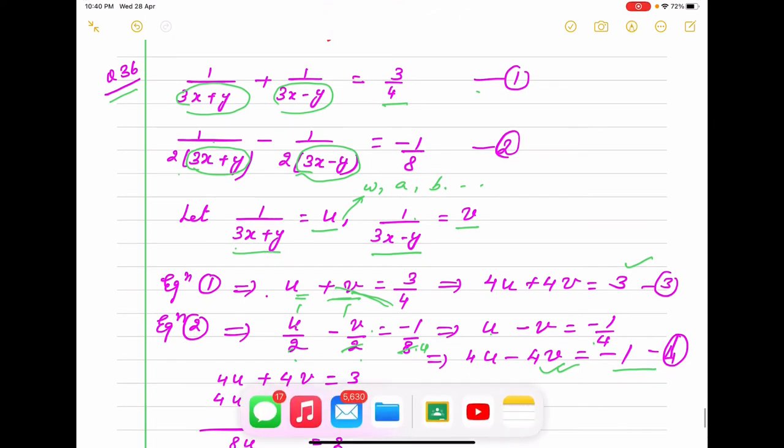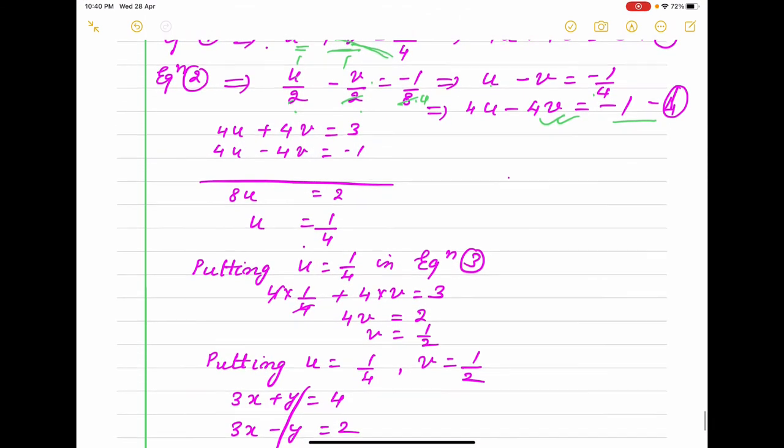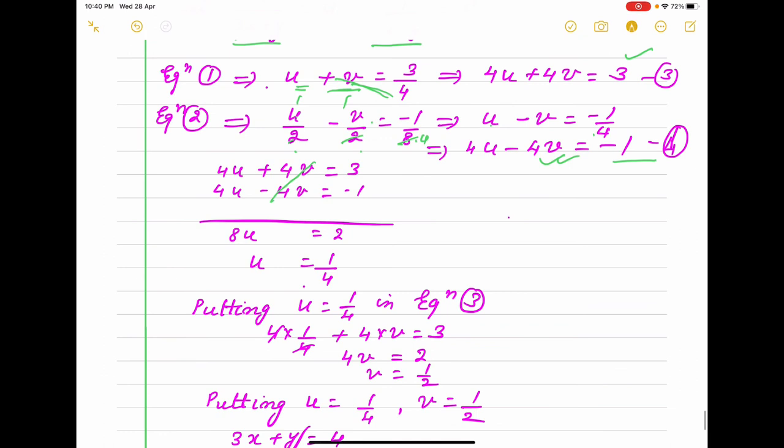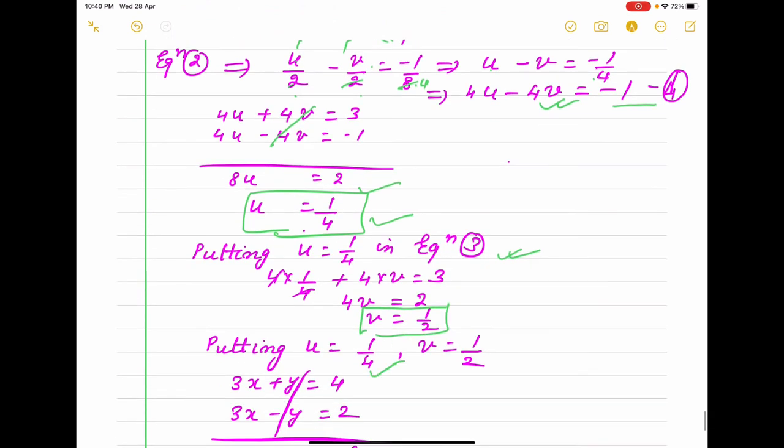4v is cancelled, so 8u = 2, u = 1/4. This value we have put in equation 3 or 4, anyone. I am putting in 3 to get the value of v. Now we have got u and v.